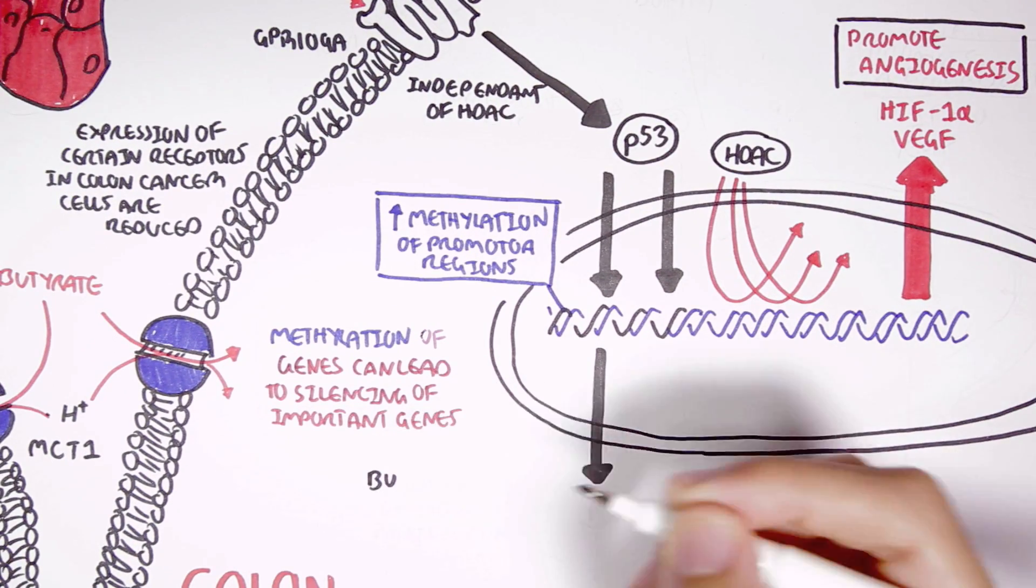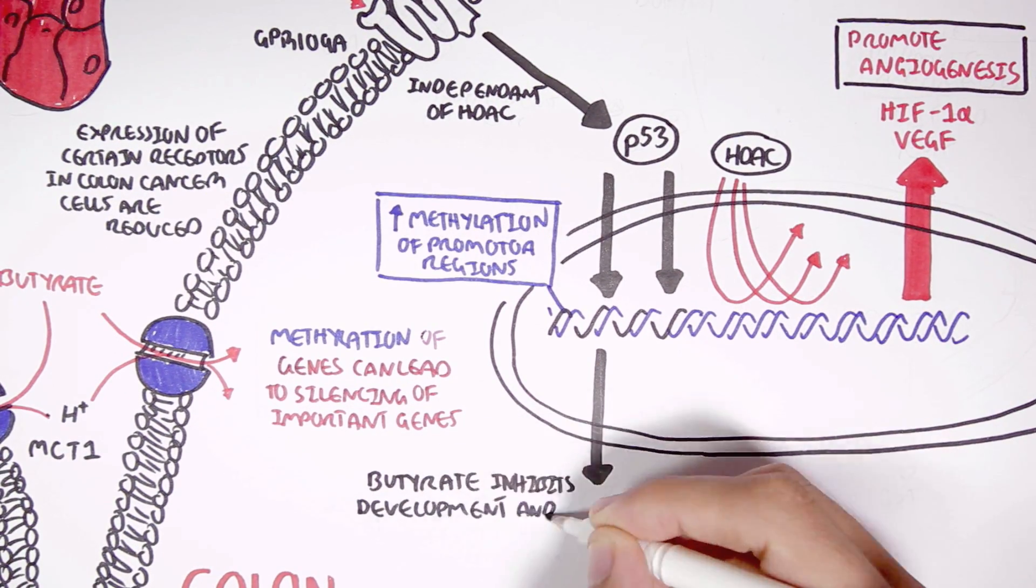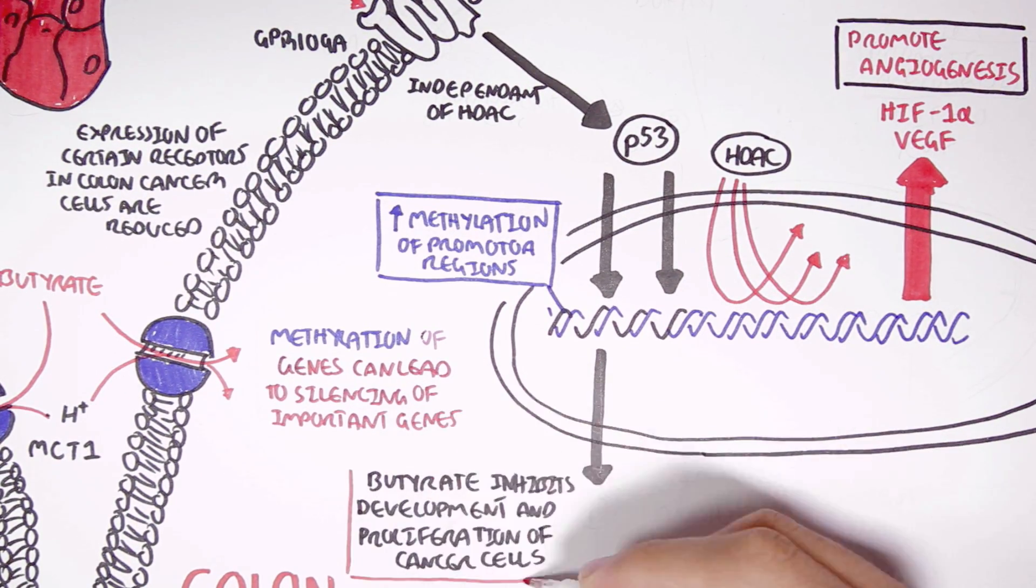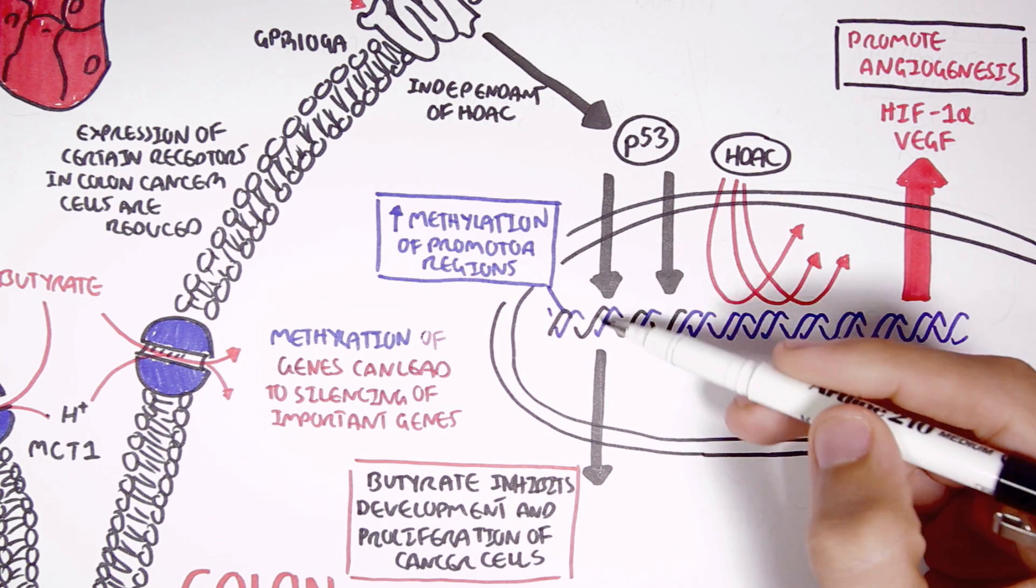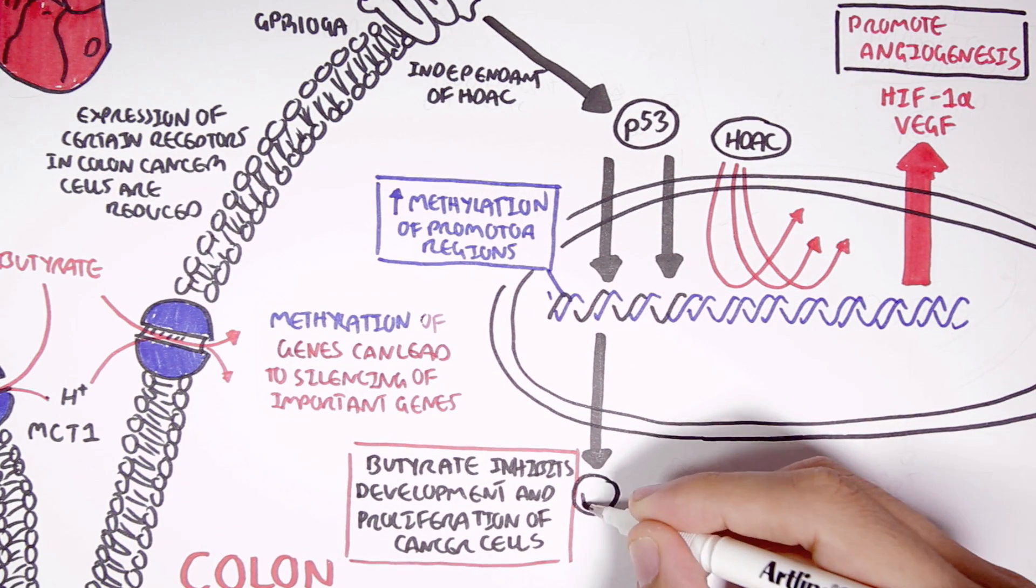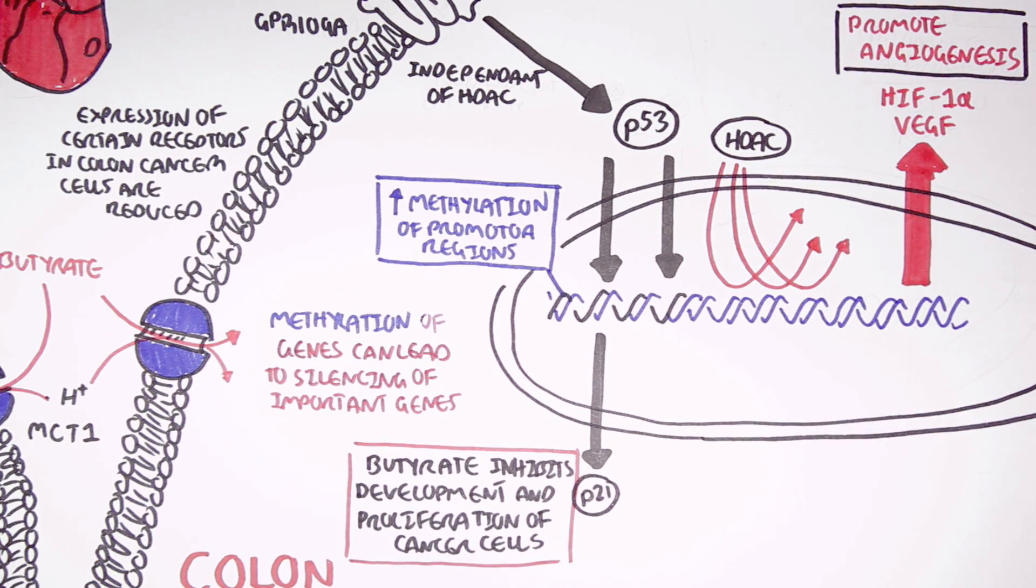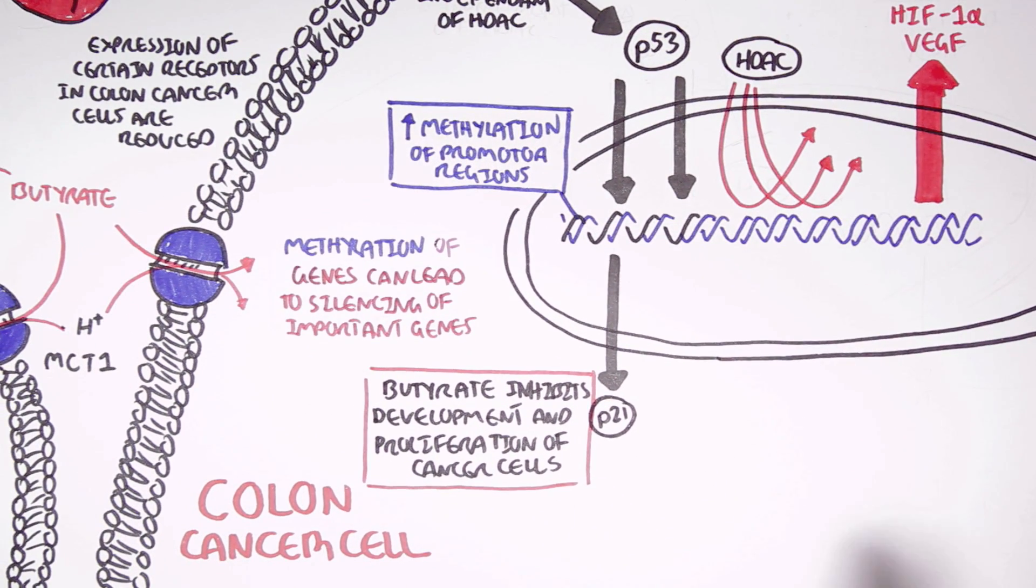P53 is a transcription factor that regulates the expression of the stress response gene and many anti-proliferative processes. So, butyrate inhibits the development and proliferation of cancer cells because the activation of the P53 transcription factor will activate genes that encode for proteins such as P21.